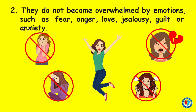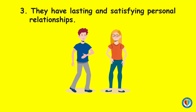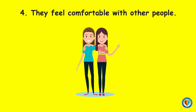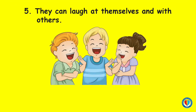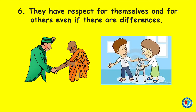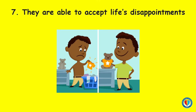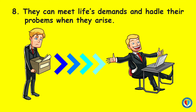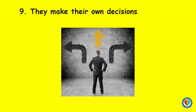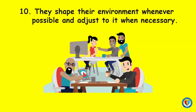Number 2: they do not become overwhelmed by emotions such as fear, anger, love, jealousy, guilt, or anxiety. Number 3: they have lasting and satisfying personal relationships. Number 4: they feel comfortable with other people. Number 5: they can laugh at themselves and with others. Number 6: they have respect for themselves as well as for others, even if there are differences. Number 7: they are able to accept life's disappointments. Number 8: they can meet life's demands and handle their problems when they arise. Number 9: they make their own decisions. Number 10: they shape their environment whenever possible and adjust to it when necessary.